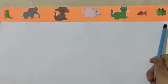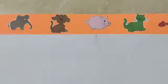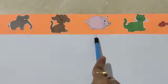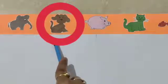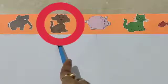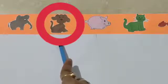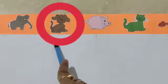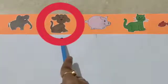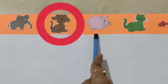Now I will explain the concept of between through these pictures. For example, if I have taken these three pictures and circled the second picture, the dog is the between picture of an elephant and a pig, as it comes after an elephant and before a pig.